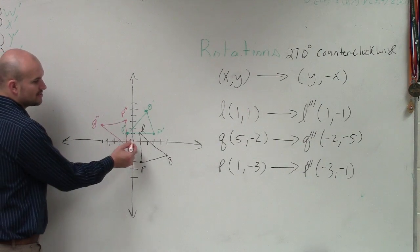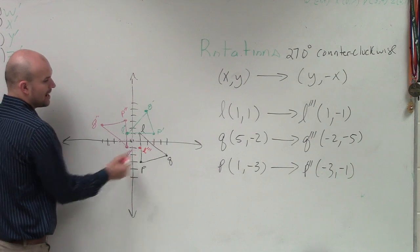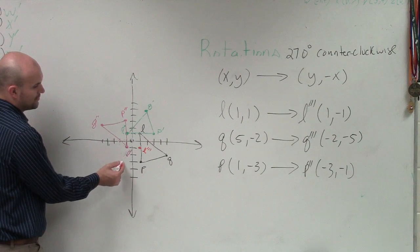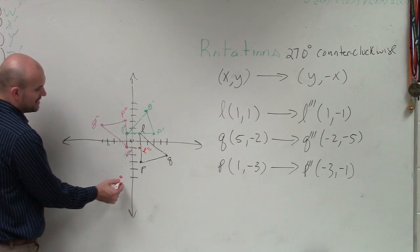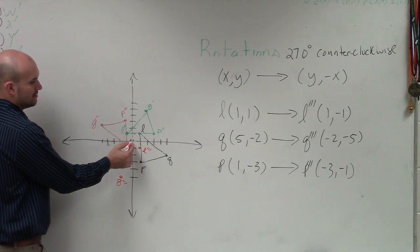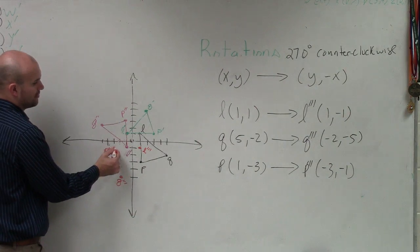So now let's go and plot these. So I have 1, negative 1. That is L triple prime. Then I have negative 2, negative 5. 1, 2, 3, 4, 5. That is Q triple prime. Then I have P, negative 1, 2, 3, negative 1. That's P triple prime.